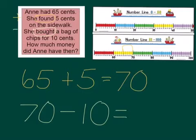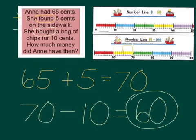So 70 take away 10 equals. Now, I know how to count in 10's. So because it's a take away, I'm going to count backwards in 10's. So 70, count backwards, land on 60. So how much money did Anne have then? She had 60 cents.